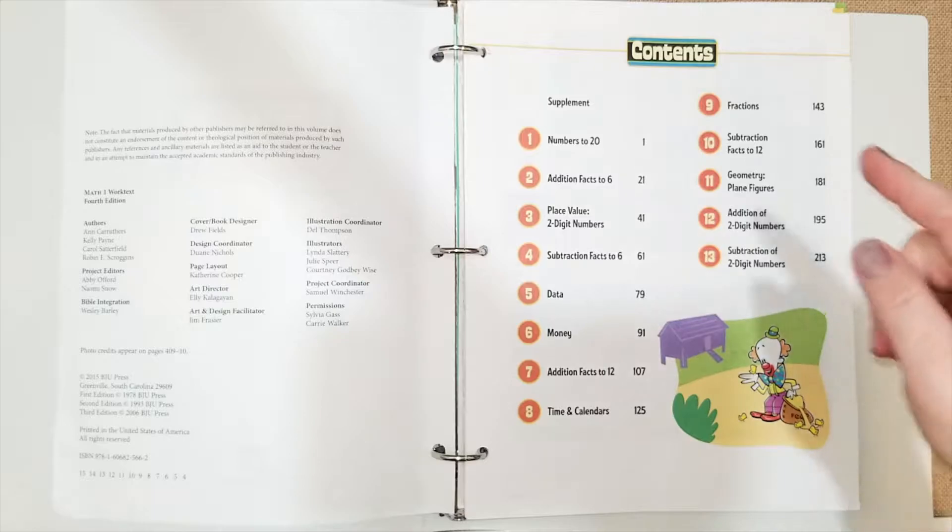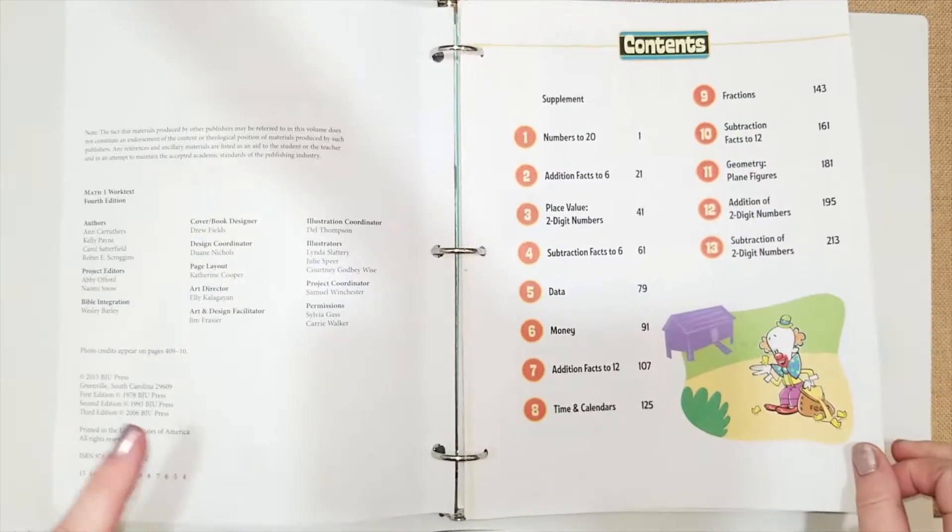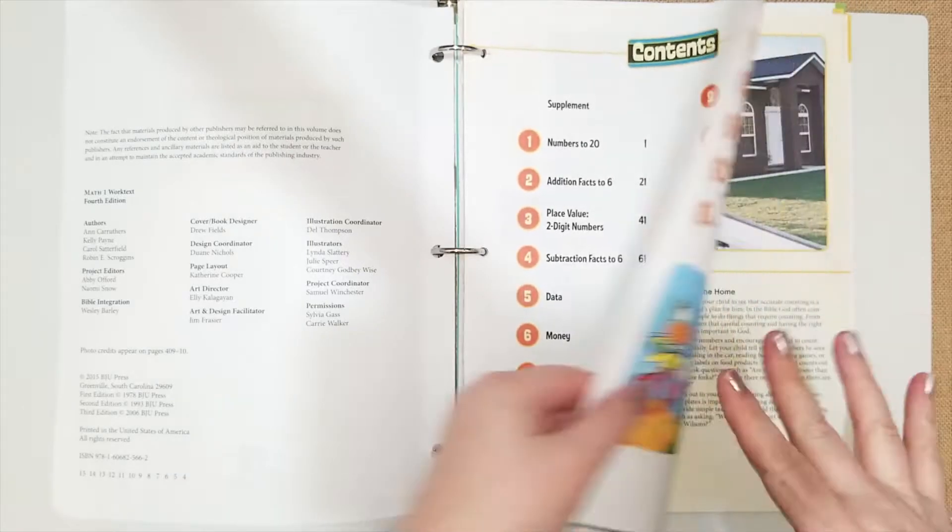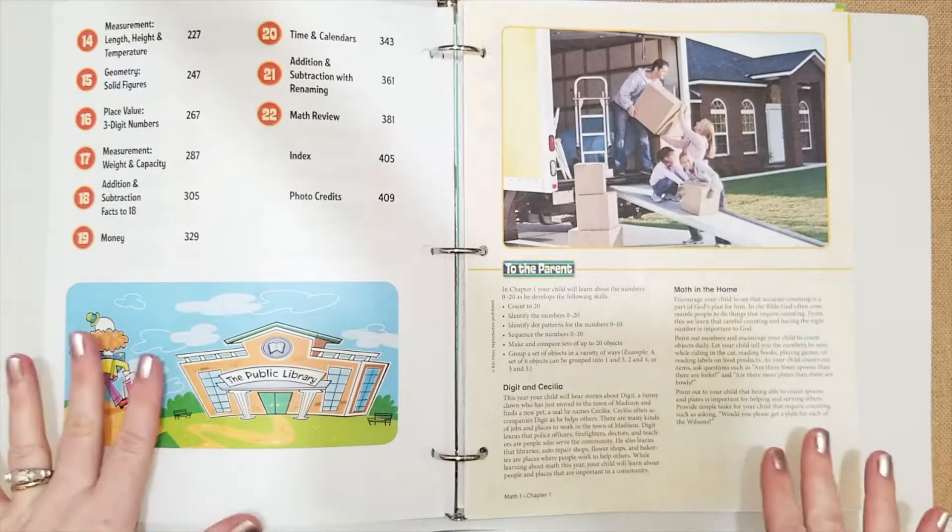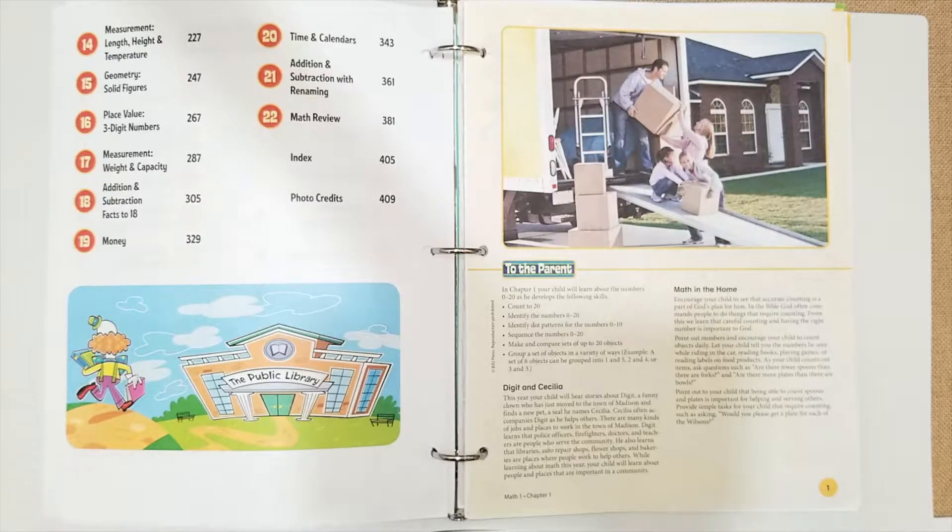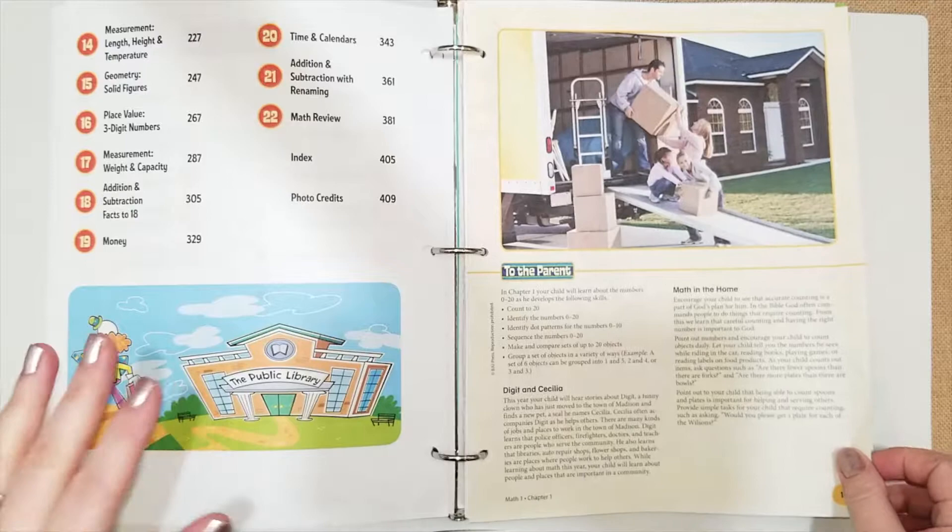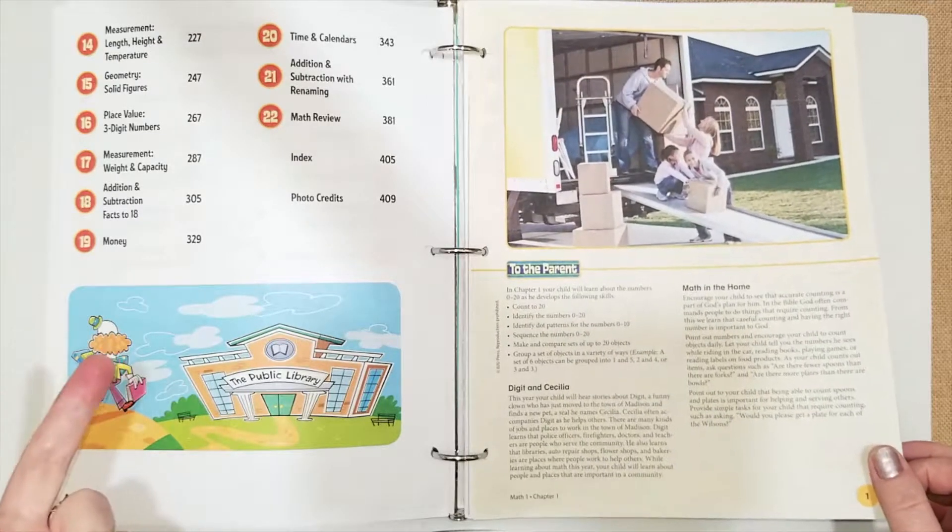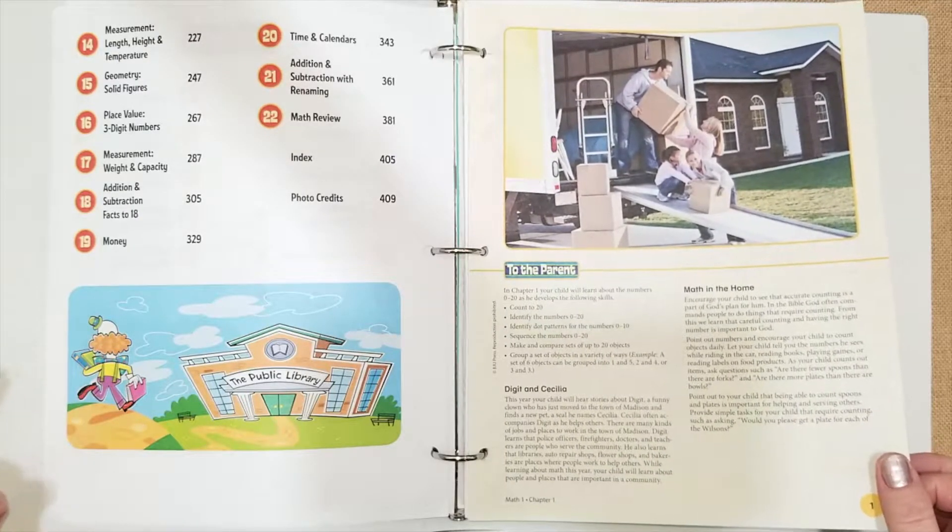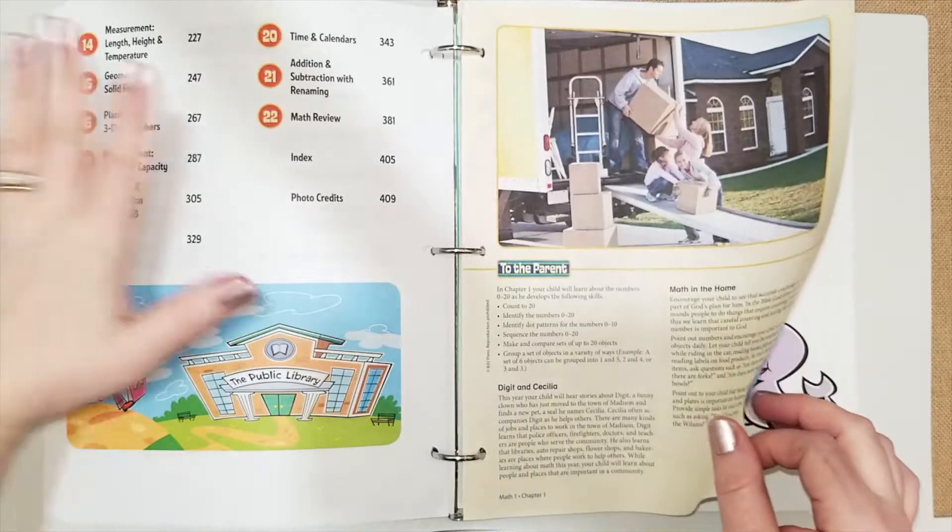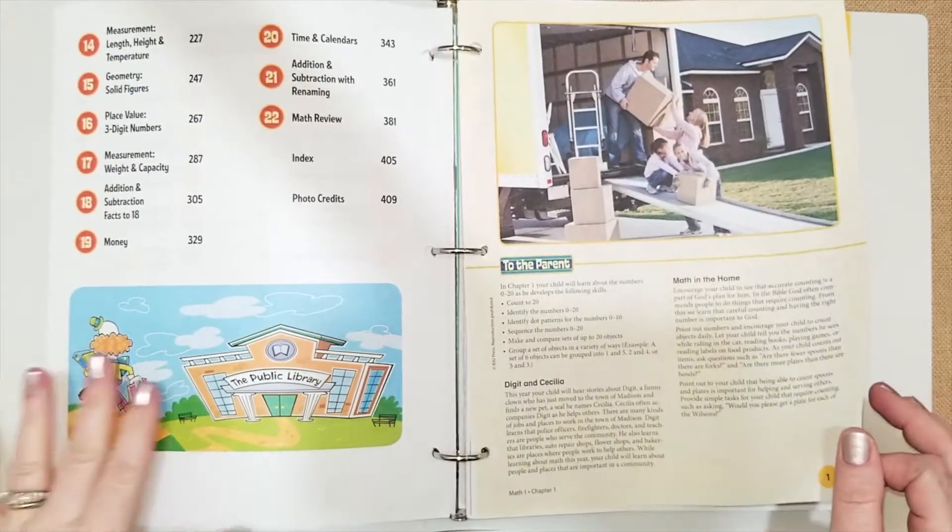It goes from numbers to 20, place value, subtraction, data, money, addition facts, times, calendars, and fraction and geometry all the way to measuring and then larger addition, double digits. They even go into triple digits, subtracting and addition, and money. So that is all of the things that they will be learning in this book.